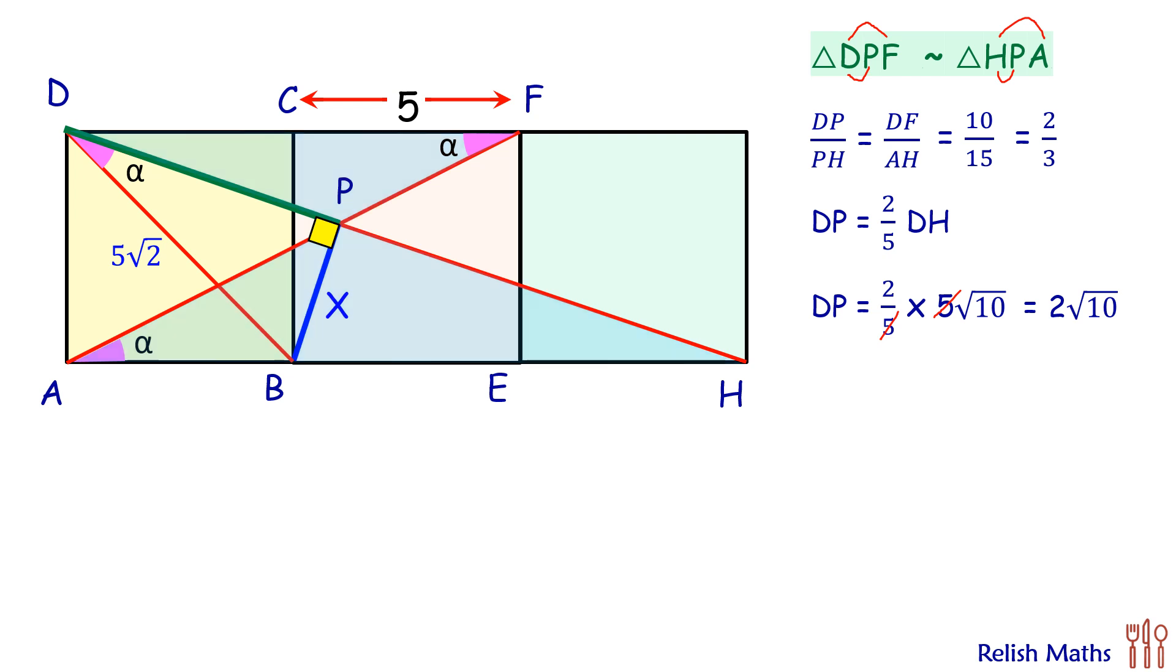Now applying Pythagorean theorem, let's put this length of DP here as 2√10 centimeters. We'll apply Pythagoras here: hypotenuse squared is the sum of squares of the sides. Solving it, we get x as √10 centimeters, and that's our answer.